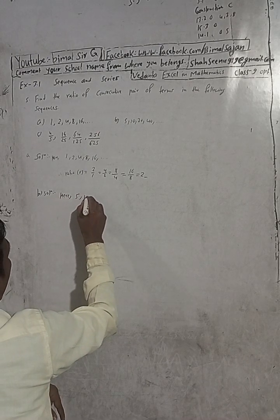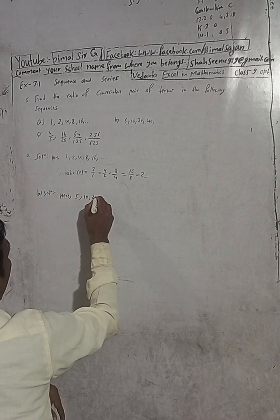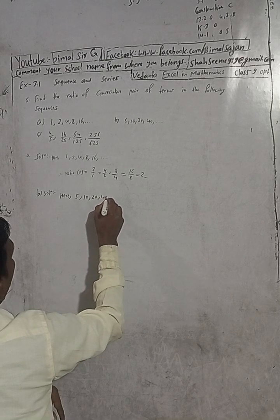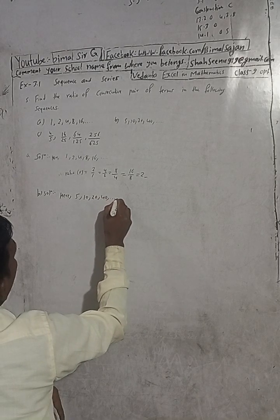The first sequence is: 5, 10, 20, 40, dot dot dot.